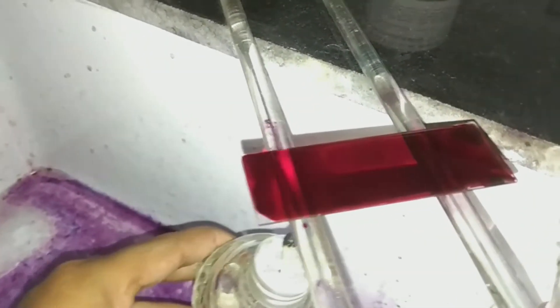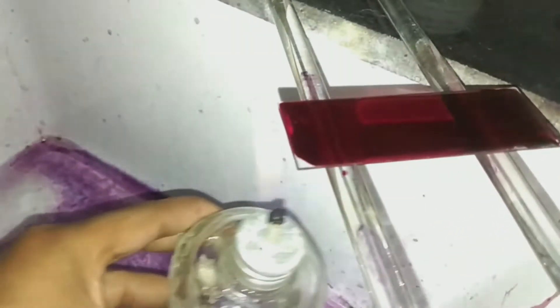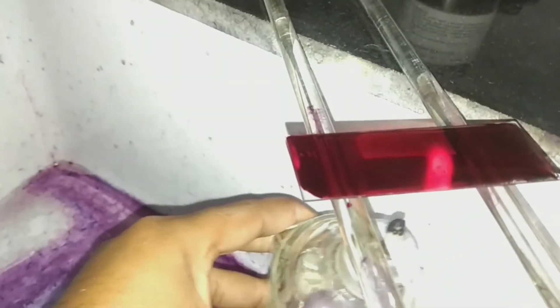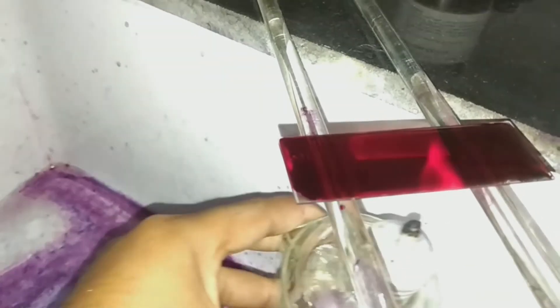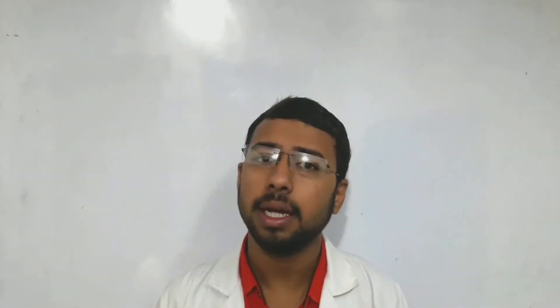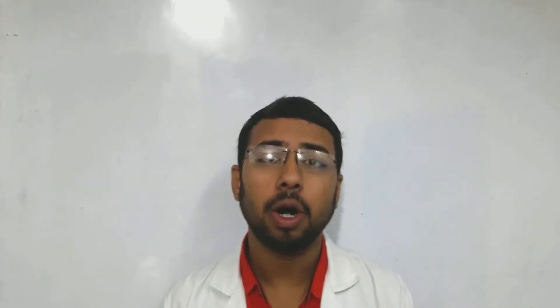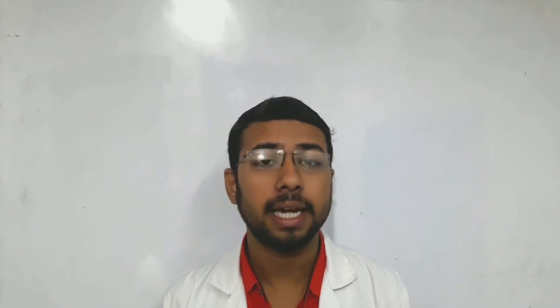When we heat the carbol fuchsin from the bottom of the slide, the lipids or waxes become softened and the carbol fuchsin enters inside the cell wall of the bacteria. That is why it is stained a reddish color.